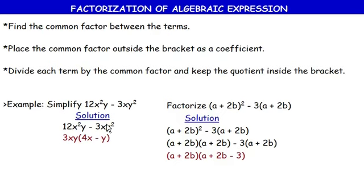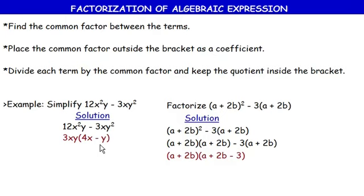For the second term, we divide 3xy² by 3xy. 3 divides 3 once — we write nothing. x divides x once — we write nothing. y divides y² y times — so we keep y in the bracket. The result is simply 3xy(4x − y).